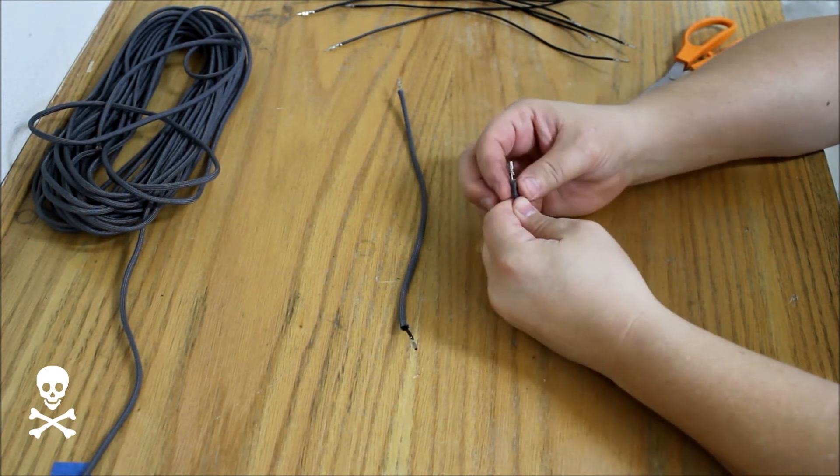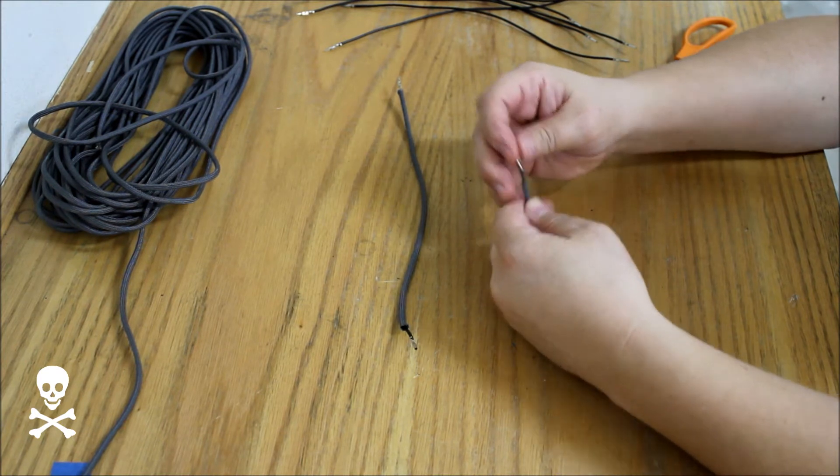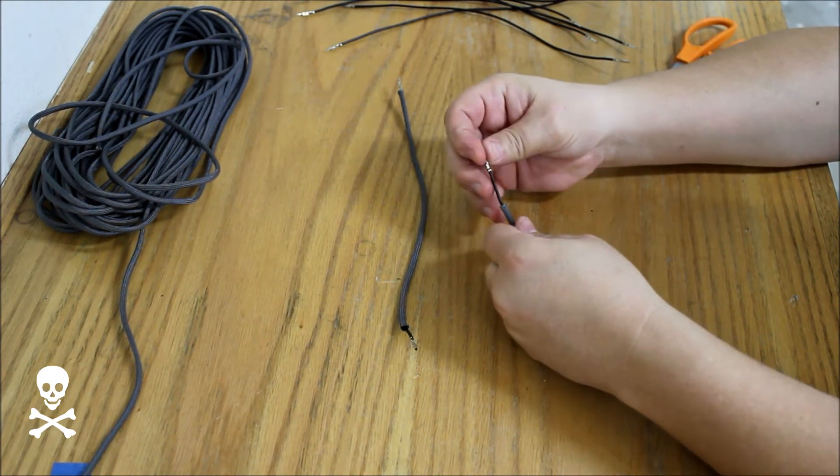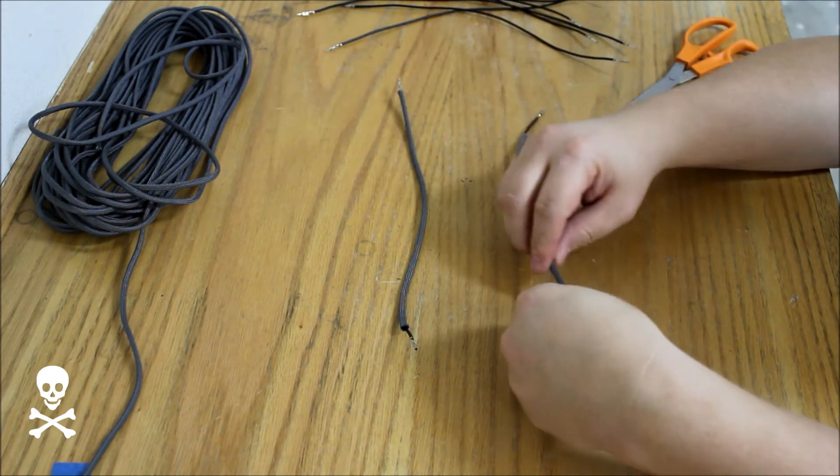So what you do here is you just pull this up around the neck piece of the cable and the idea is just to melt the end.